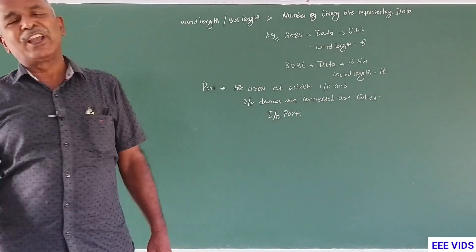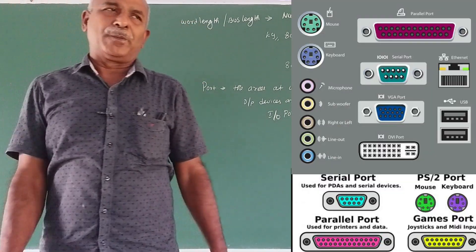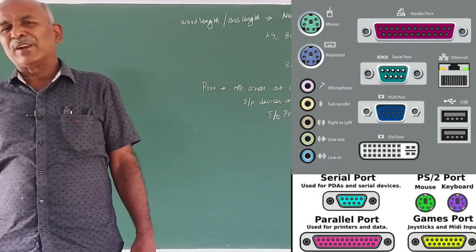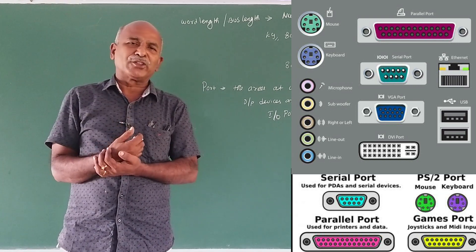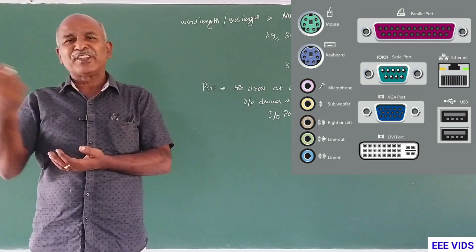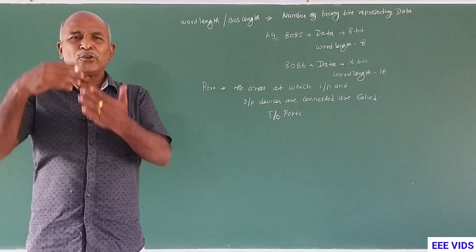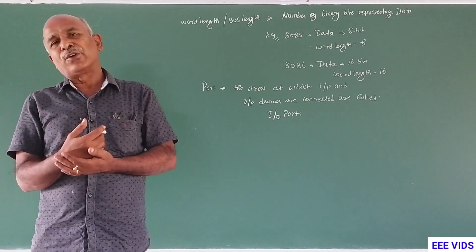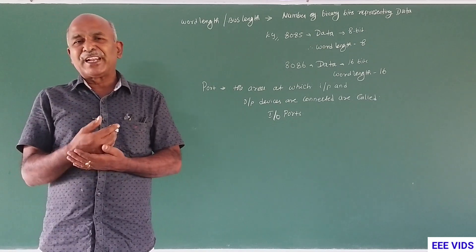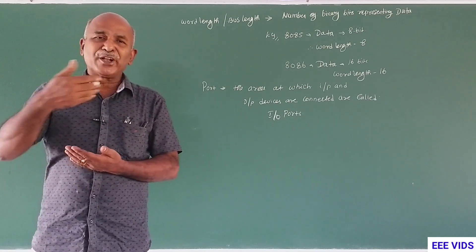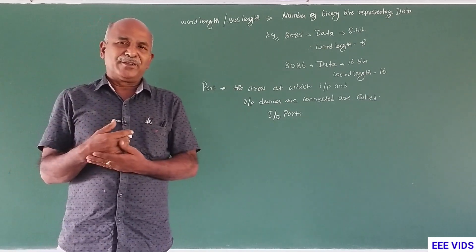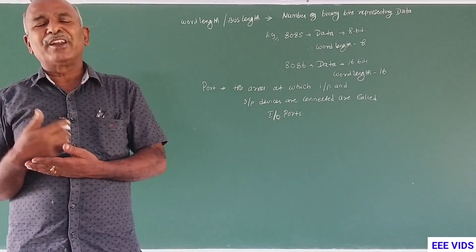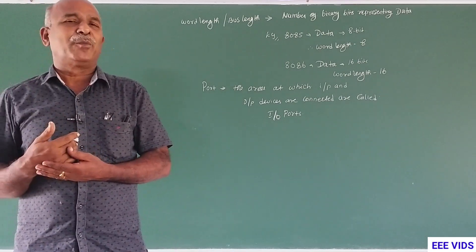It's called I/O ports. One operation is connected to the area of port. For example, the serial port — data outputs bit by bit. That is called a serial operation.